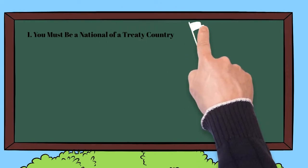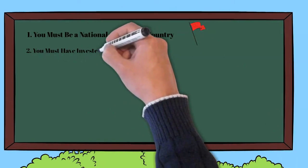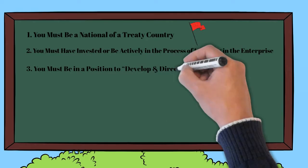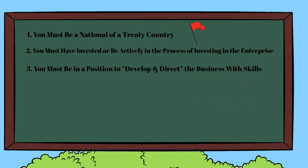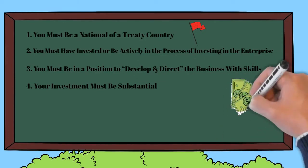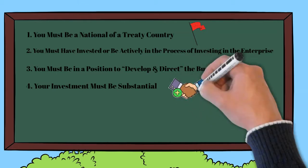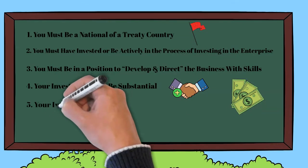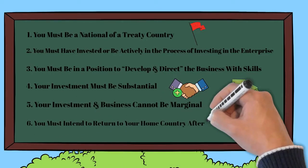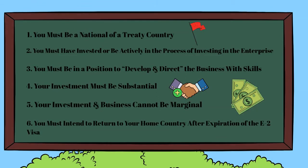What are the E2 requirements and eligibility? There are six key requirements for the E2 visa. First, you must be a national of a treaty country. Second, you must have invested or be actively in the process of investing in the enterprise. Third, you must be in a position to develop and direct the business with skills. Fourth, your investment must be substantial — the required investment amount depends on the type of business you start, but expenditures can be as low as $50,000 for this visa. Fifth, your investment in the business cannot be marginal. Sixth, you must intend to return to your home country after expiration of the E2 visa. You can find a full set of E2 visa requirements linked in the description box below.